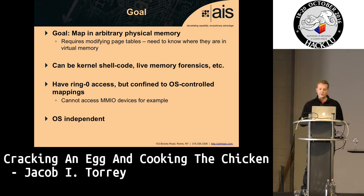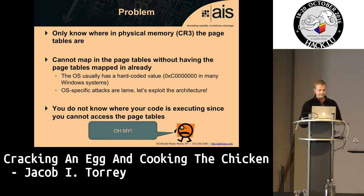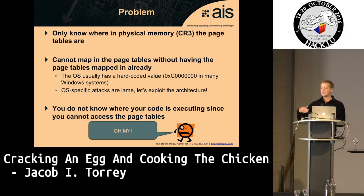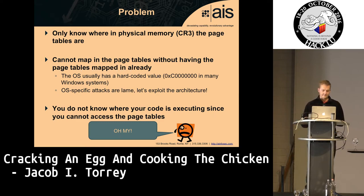In this first scenario, we have ring-zero control but not necessarily control over the operating system, and we want to do this in an OS-independent way — because architectural hacks are far more fun since you can't patch the architecture. We know the physical address of the page tables from CR3, but we don't know where they're mapped into virtual memory. The OS usually hard-codes that; on Windows you just go to a fixed address and you have the virtual address, but those attacks are lame.